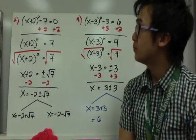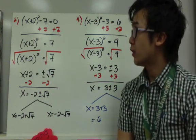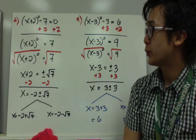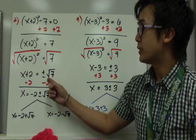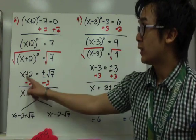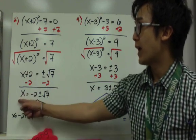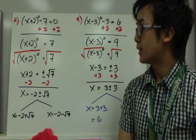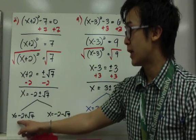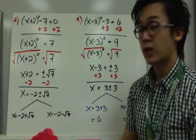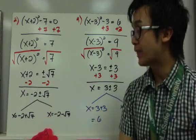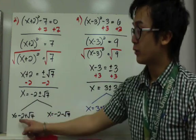For example number 3, we have x plus 2, quantity squared, minus 7 equals 0. We add 7 on both sides to get the quantity x plus 2 squared equals 7. Getting rid of the exponent, we have x plus 2 equals plus or minus the square root of 7. The square root of 7 cannot be further simplified. To solve for x, we subtract 2 from both sides, giving x equals negative 2 plus or minus the square root of 7. The two answers are x equals negative 2 plus the square root of 7, and x equals negative 2 minus the square root of 7. Since we cannot add a real number and a radical, we leave it as is.